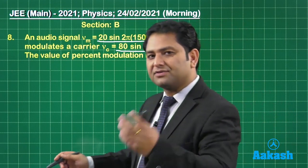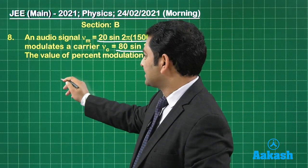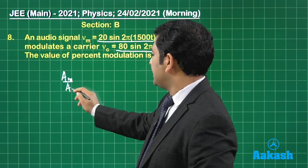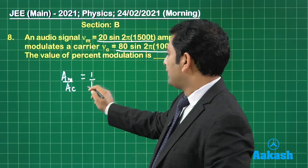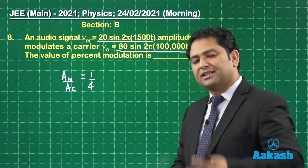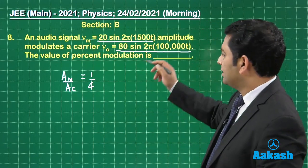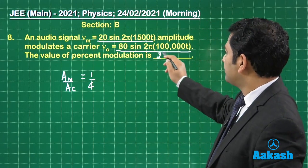So that comes from the modulation index, which is AM by AC. So that is one by four. And if I convert it into percentage, that will be 25%.